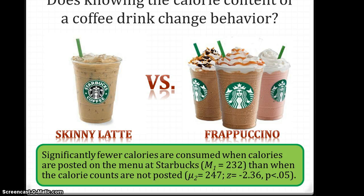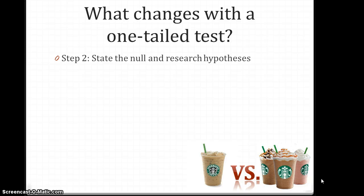We have our significant z-test of negative 2.36, and p is less than 0.05, and that's a two-tailed test. What changes with a one-tailed test? We don't need to go back and revisit every single step of hypothesis testing, but there are certain steps we need to change. The first step is the way that we state our null and research hypotheses.